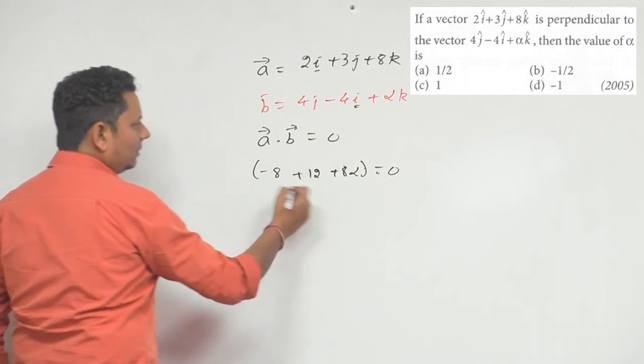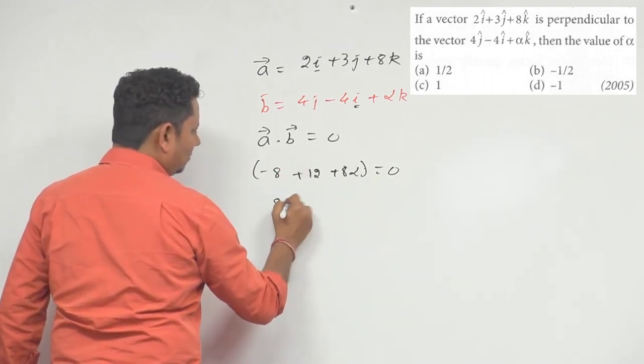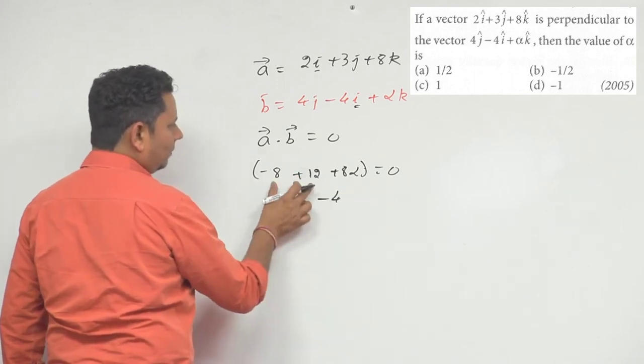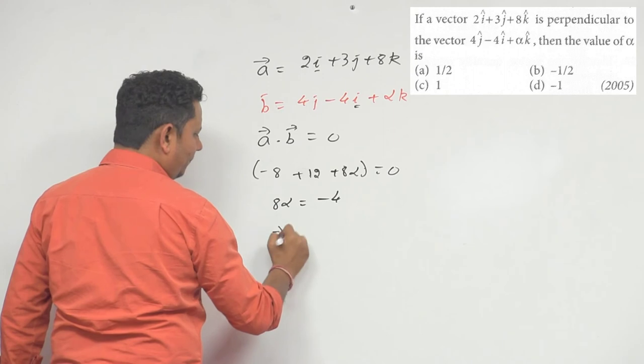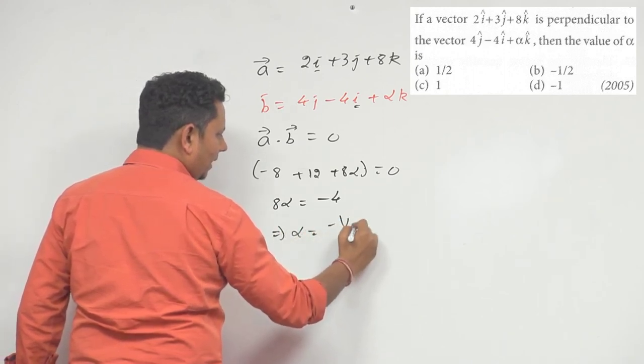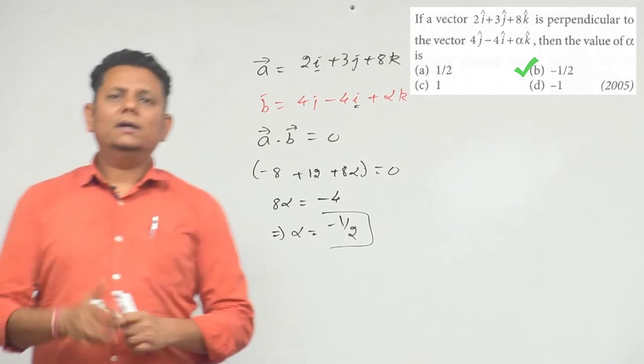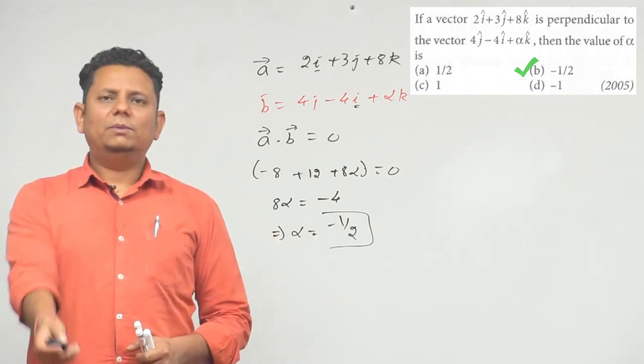The sum equals 0. Moving terms to the other side, which means 8 alpha will be equal to minus 4, which implies alpha will be equal to minus 1/2. So based on this we can say that option b, minus 1/2, will be the correct choice.